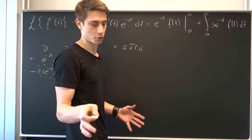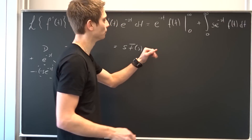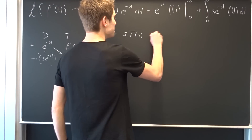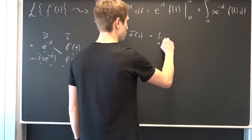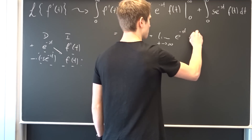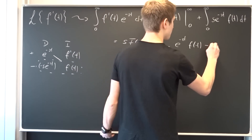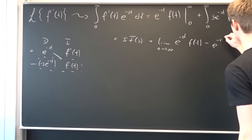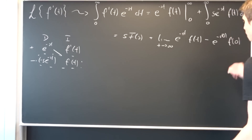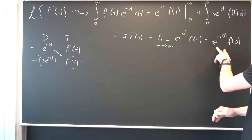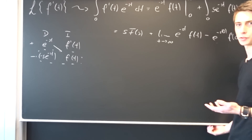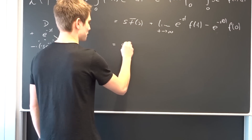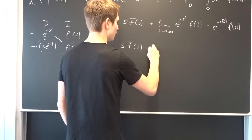Take a look in the description if you don't know what I'm talking about — there will be a link to the corresponding video. Now we plug in the limits. So we have the limit as t approaches infinity of e to the minus st times f of t, then minus e to the minus s times zero times f of zero. Since e to the minus s times zero is just one, this simplifies to minus f of zero. So the result is s times capital F of s minus f of zero.